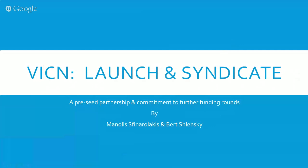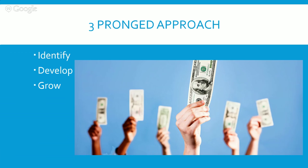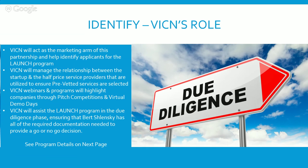We're partnering up with Startup Connection, whose founder is Bert Shelensky. We're doing this partnership through AngelList. There's going to be a three-pronged approach: we're going to identify promising entrepreneurs, further develop them, and then help them grow by giving them access to additional capital through syndications and other investors.